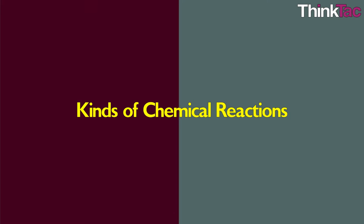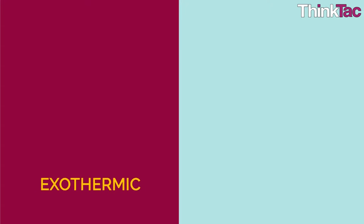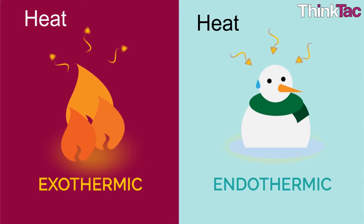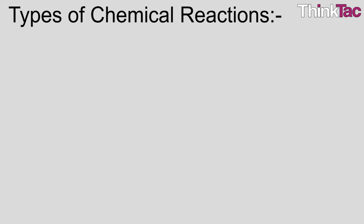There are various kinds of chemical reactions. Broadly they can be categorized as those where heat is released or where it is absorbed. These are called exothermic and endothermic reactions respectively. Note that there are physical changes too that can be endothermic or exothermic.